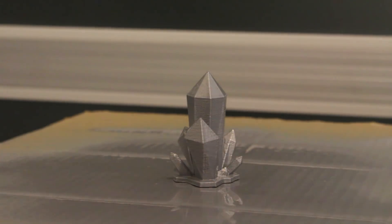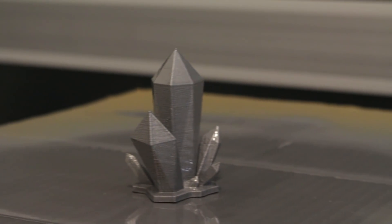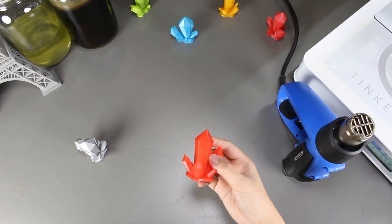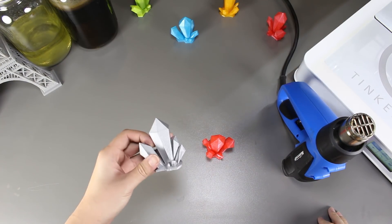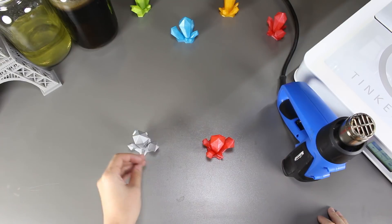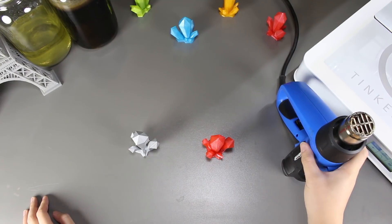After we are done, we'll let it dry. So now we have a regular gem on the right with no ceramic paint on it and a gem with a coat of ceramic paint on our left. I wonder if there will actually be any difference between the two.